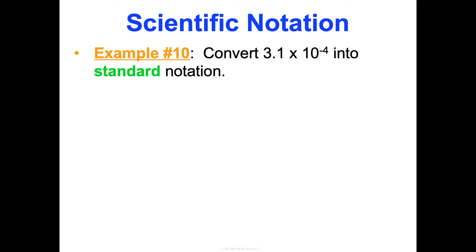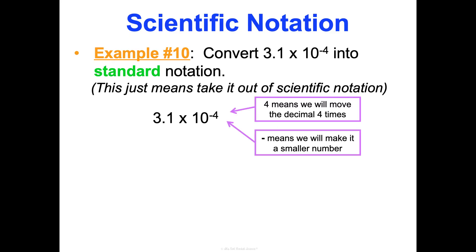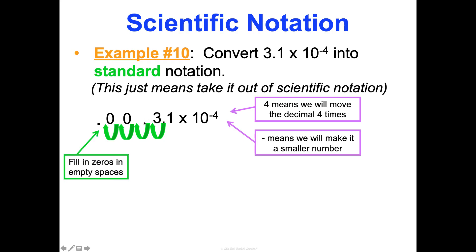Convert 3.1 × 10⁻⁴ into standard notation. The 4 tells us we move the decimal four times. The negative tells us we're making this a small number. Moving one, two, three, four places, we put the new decimal point there and fill in placeholder zeros. Final answer: 0.0031. We started with two sig figs and ended with two sig figs — none of the placeholder zeros are significant. Scientific notation really helps with sig figs.